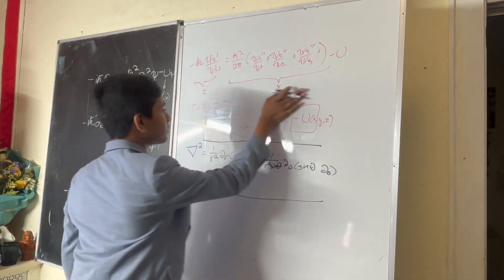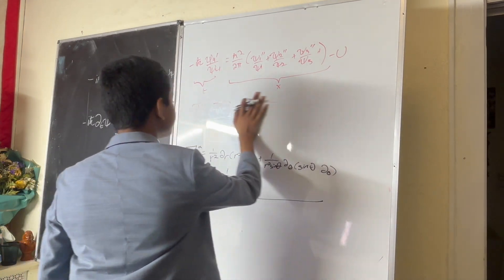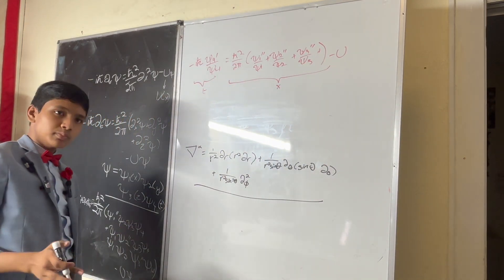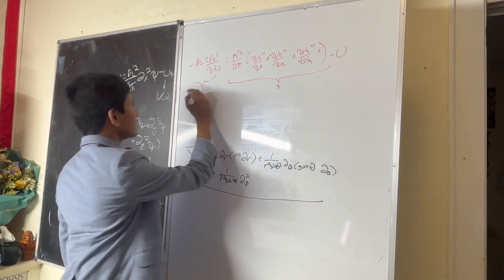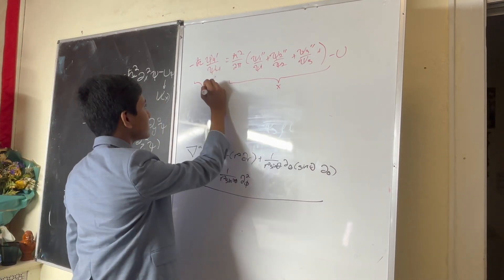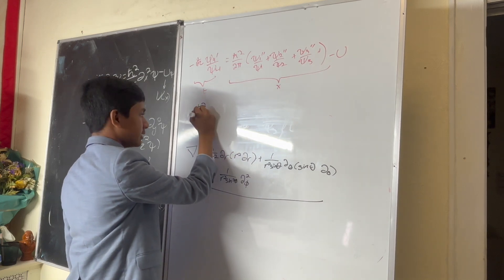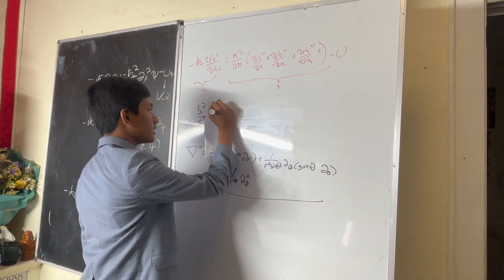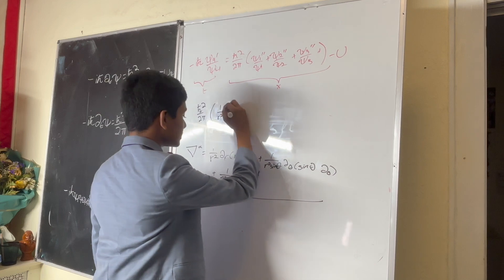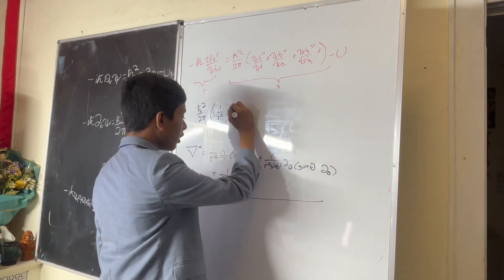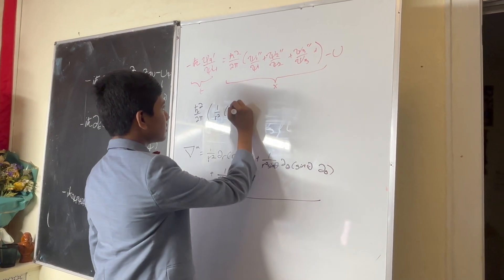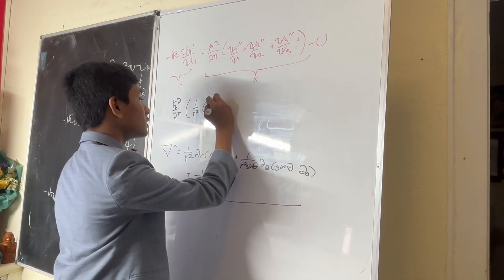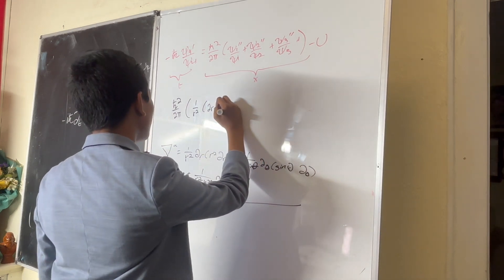So, what happens when we plug things in that way? Well, now dividing them by psi has some more horrific consequences. We now get, well, this side is still pretty easy to work with, nothing actually changes. Here, we're going to get 1 over r squared. This is going to be 2r psi 1 prime.